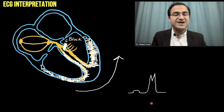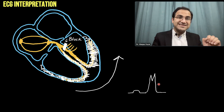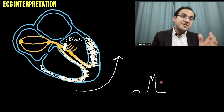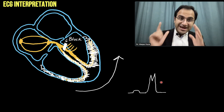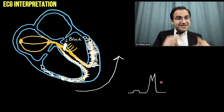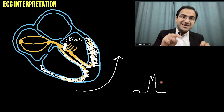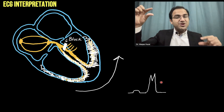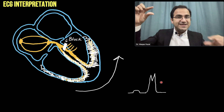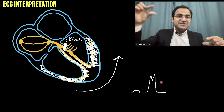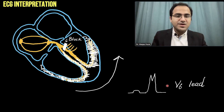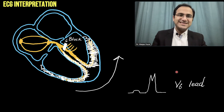In left bundle branch block, this M wave is seen in V5 and V6. In our previous video on right bundle branch block, the M wave was also present but it was in V1. So in left bundle branch block the M wave is in V6, whereas in right bundle branch block the M wave is in V1.